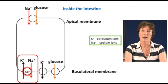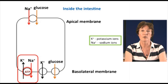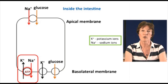The potassium ions that are brought in by the sodium-potassium ATPase can leave the cell via facilitated diffusion through a transporter protein on the basolateral membrane. This makes sure that potassium ions don't build up inside the cell.